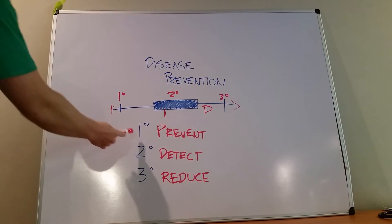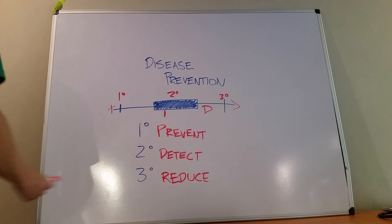So these are the three different levels. We try and prevent a disease from happening. We try and detect it so we know when it does occur. And that helps with the third level here, which is the reduction of its extent or the reduction of its effects.